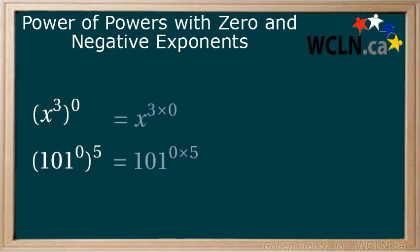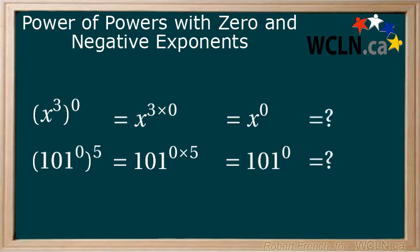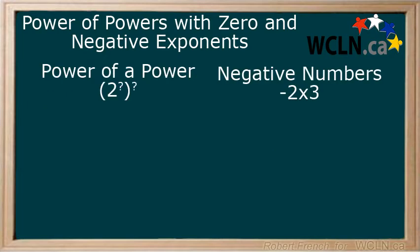First, multiply the exponents together: 3 multiplied by zero, and 0 multiplied by 5. Both of these are equal to zero. Now both of our examples have an exponent of zero, which means both equal 1, because anything to the power of zero equals 1. The same idea applies with negative exponents.